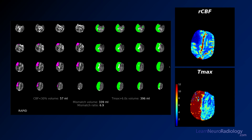And so it's in that area where we saw hypodensity on CT. But if we look at the T-max, it's detecting a much larger area of elevated T-max, so there's a much larger area of tissue at risk.